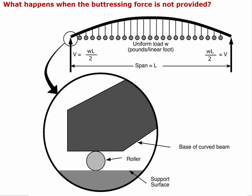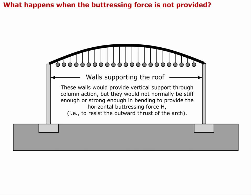The question is: what happens if we remove the horizontal component of that force? That could happen if, instead of providing a pin joint, we put a roller joint where one or both ends of the arch could splay outward. We could also create this situation in buildings by putting a curved spanning member on top of tall slender walls. Those walls would provide vertical support through column action but would not normally be stiff or strong enough in bending to provide the horizontal buttressing force — they won't be able to resist the outward thrust of this arch. These are examples of a curved element supported with essentially just vertical forces and no horizontal forces.